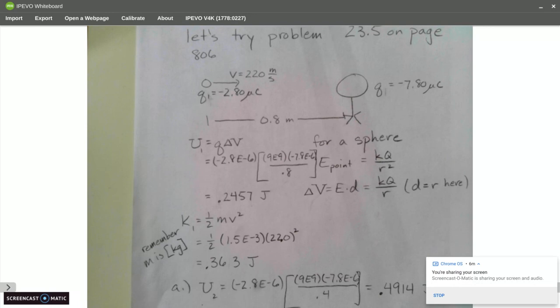So I'm going to find the potential energy one. Let me read the question to you so you can follow along. A small metal sphere carrying a net charge of Q1 is negative 2.8 microcoulombs is held at a stationary position by insulating supports. A second small metal sphere with a net charge of Q2 equals negative 7.80 microcoulombs and mass of 1.50 grams is projected towards Q.